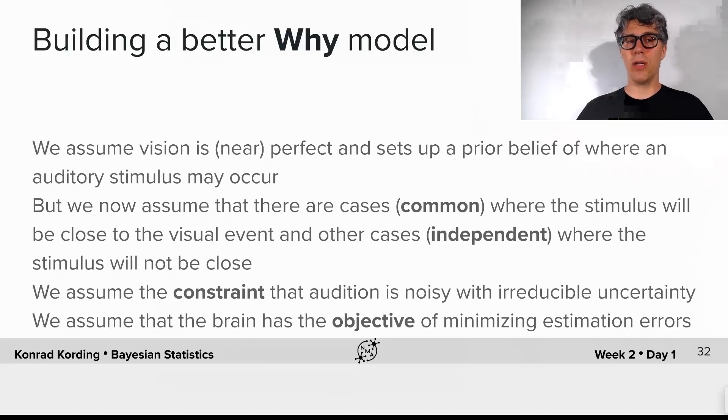So we will build another Bayesian wire model. So we again assume that vision is near perfect and sets up a prior belief of where the auditory stimulus may occur. But we now assume that it's not the case that in all cases we expect the auditory stimulus to be close to the visual one. But we assume that there's two implied cases. There's the common case where the assumption is that the visual stimulus must be very close to the auditory one. And then there's an alternative case, the independent case, where we don't believe the two of them to be very close to one another. If anything, we allow the auditory stimulus to be very far away from the other one. And we again assume that audition has the constraint of being having irreducible uncertainty. And we assume again that the brain has the objective of minimizing estimation errors.